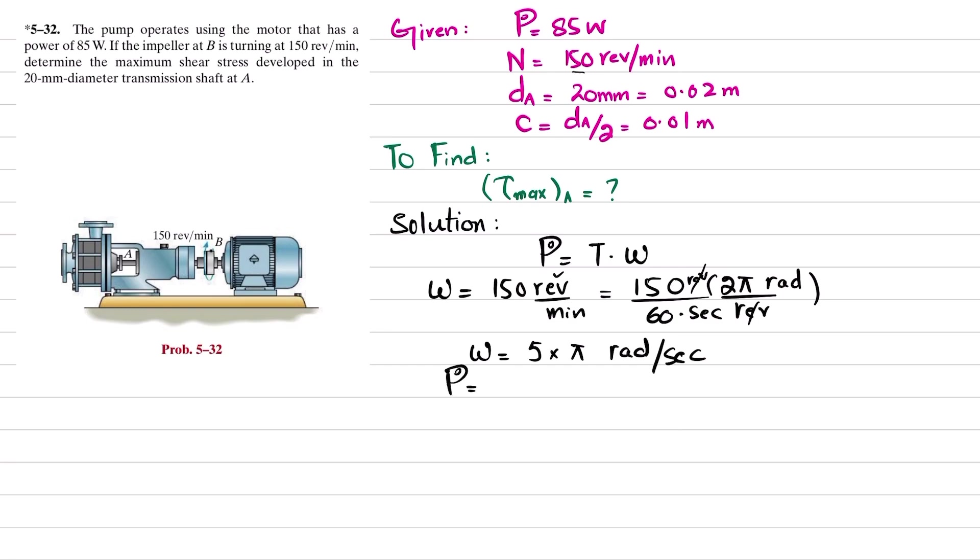From here we know that torque is equal to power divided by angular velocity. So we will get T equals power, which is 85 watts, divided by angular velocity, which is 5π radians per second.